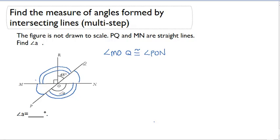So that's MOQ, is this whole angle right here, is going to be congruent to PON. Well, PON is actually where angle A is, which is going to be helpful for us when we try to solve for that missing angle measurement. And we already know the measure of MOQ.